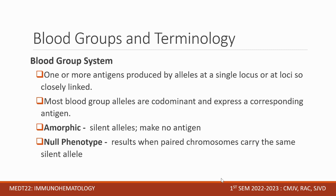One or more antigens produced by alleles at a single locus, or closely linked loci, determine what we call a blood group system. Most blood group alleles are co-dominant and express a corresponding antigen. We have the term 'amorph' — these are the silent alleles that make no antigen. The null phenotype results when paired chromosomes carry the same silent alleles from both father and mother, so no antigen is expressed.